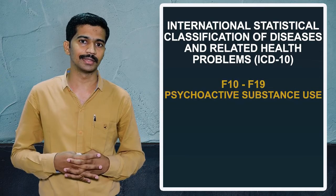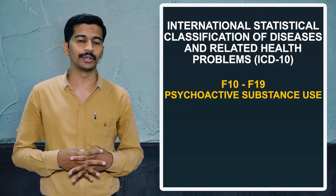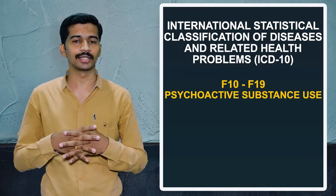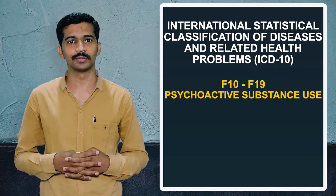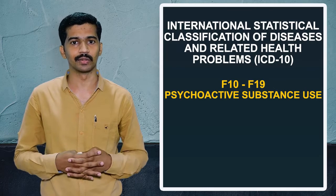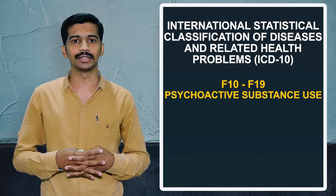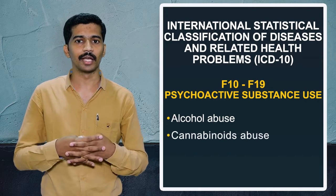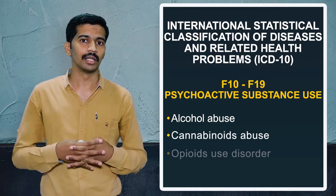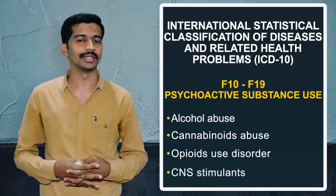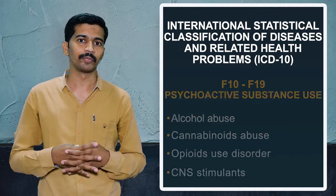The next chapter, F10 to F19, covers psychoactive substance use disorders. In this chapter we can see alcoholism, cannabis use, opioid use, CNS stimulants, and so on.